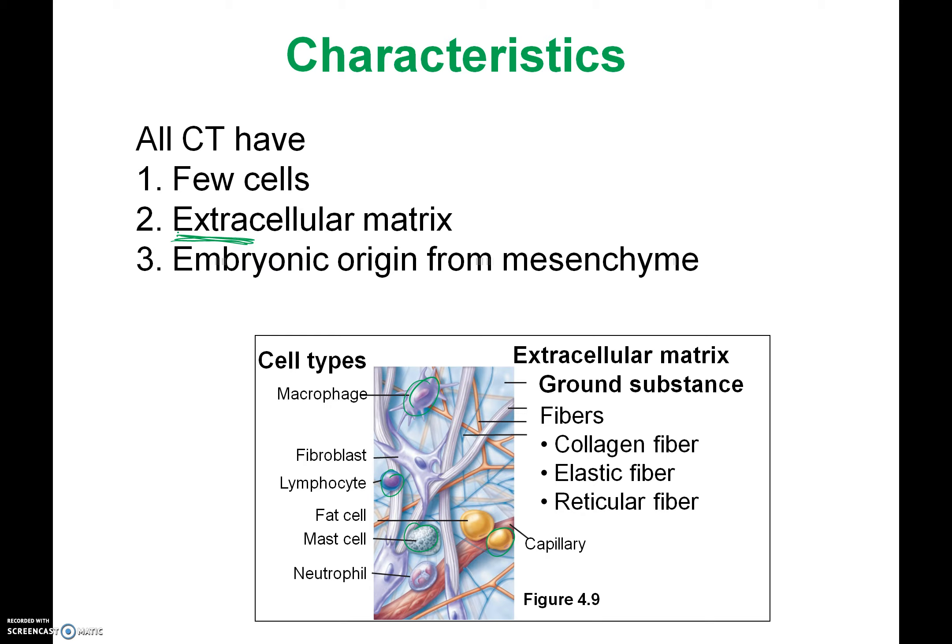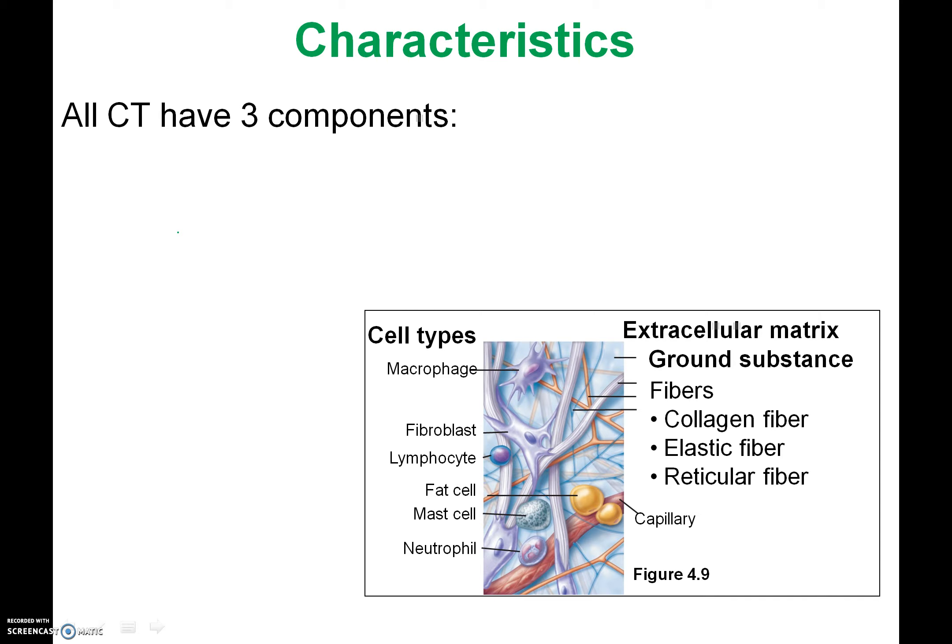The third thing all connective tissue has is an embryonic origin from a tissue called mesenchyme. Meaning that all connective tissue — regardless of whether it's blood, bone, or cartilage — its origin basically comes from this mesenchyme tissue, like a common ancestor. So to summarize, they have few cells, extracellular matrix, and they all share the same origin of mesenchyme tissue.